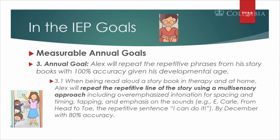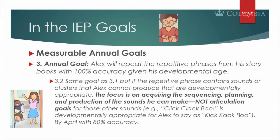The third annual goal is to practice repetitive phrases from storybooks. He loves his storybooks — 'From Head to Toe' and 'Click Clack Boo.' He could be working through reading stories, which they do a lot of at home, to practice sounds and sentences. If he says 'kick-kack boo' for 'click-clack boo,' who cares? That's fine. He doesn't need CL cluster combinations at two years ten months, or really even for two more years.